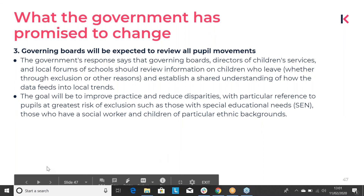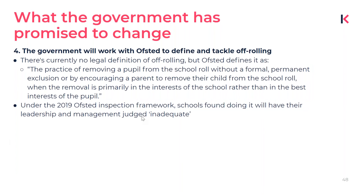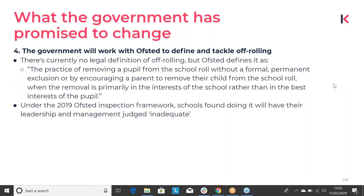The fourth promise is that the government plans to work with Ofsted to define and tackle off-rolling. Despite all the news coverage, there's still no official legal definition of off-rolling. Ofsted currently defines it as the practice of removing a pupil from the school roll without a formal permanent exclusion, or encouraging a parent to remove their child when the removal is primarily in the interest of the school rather than the pupil. Under the updated Ofsted inspection framework, schools found doing it will have their leadership and management judged inadequate, but the government plans to tighten this up further.